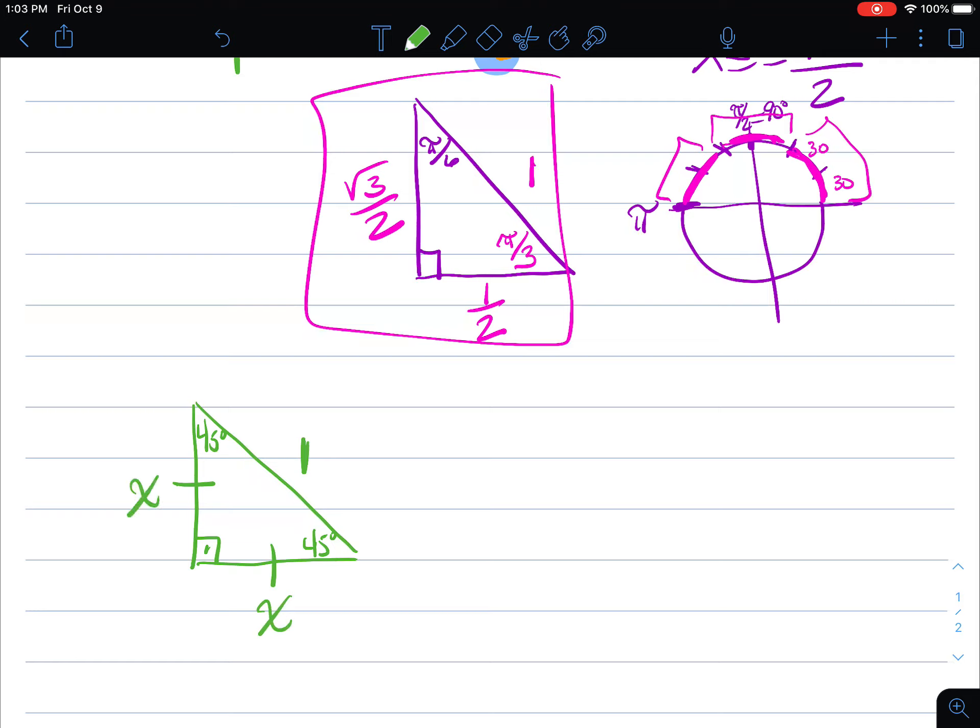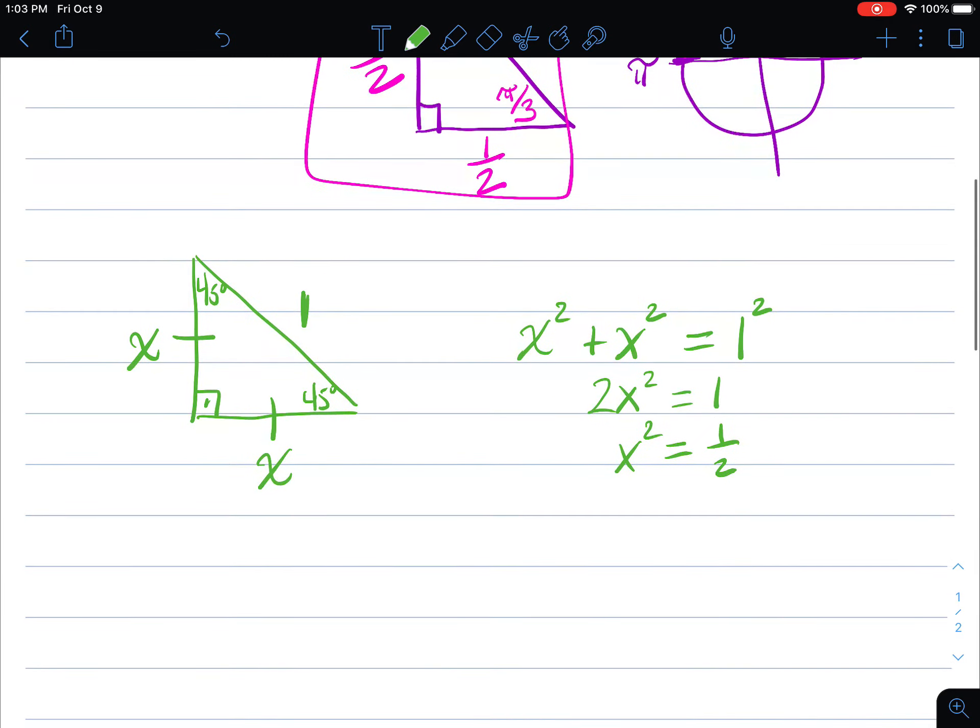Let's call each of these congruent sides x. We're going to go ahead and use that same Pythagorean theorem: x squared plus x squared is equal to 1 squared. 2x squared equals 1, x squared is equal to 1 half.